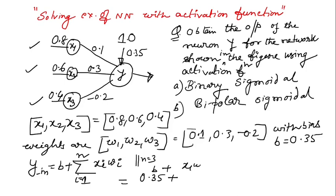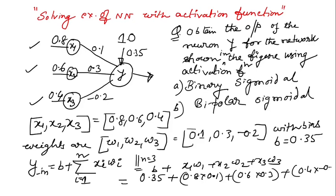X1 W1 plus X2 W2 plus X3 W3. So this will be nothing but B is 0.35 and X1 W1 is 0.8 into 0.1 plus 0.6 into 0.3 plus 0.4 into minus 0.2.